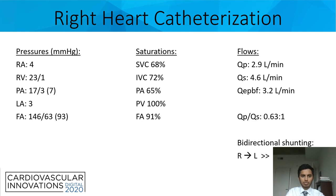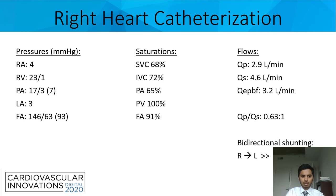She had a right heart cath done as well. Pulmonary circulation was 2.9 and systemic circulation was 4.6. Overall, the right-to-left shunt was much greater than the left-to-right shunt. Her femoral artery saturation was 91%, her pulmonary artery saturation was 65%, and right-sided pressures showed an RA pressure of 4.